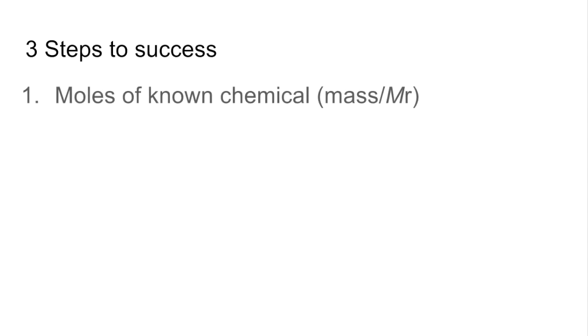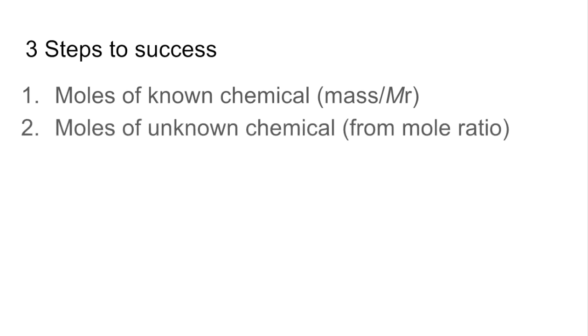Step one: calculate the moles of the known chemical, so that's the chemical you're told the mass for - mass divided by Mr. Step two: calculate the moles of the unknown chemical, and you do that from the mole ratio between the chemicals in the question. Step three: convert the moles of the unknown chemical into mass, so that's moles times Mr.